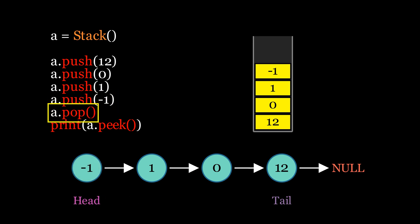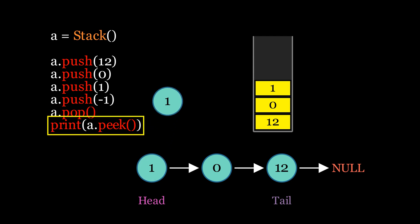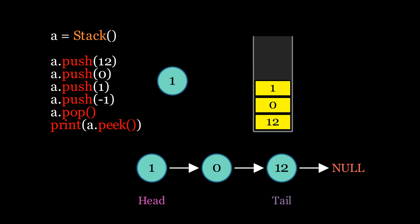Popping involves removing the element from the head node, which is also a constant-time operation. The peek operation simply retrieves the data from the head node of the list, and this too is a constant-time operation. Understanding the linked list data structure is crucial to grasp how this implementation works. We have detailed videos on both linked lists and arrays on this channel, which you can check out for a deeper understanding.